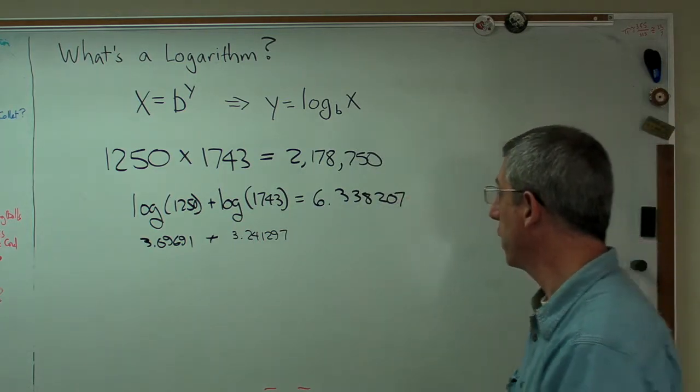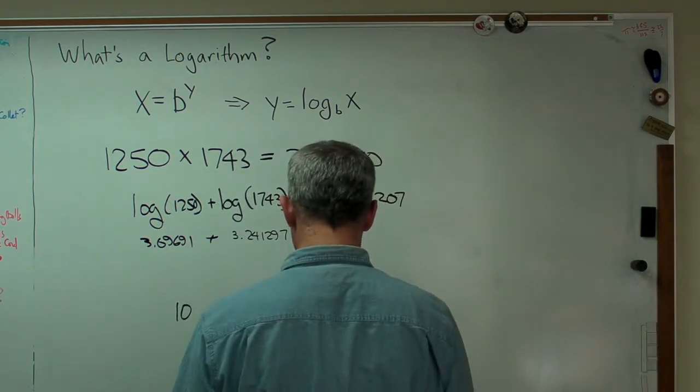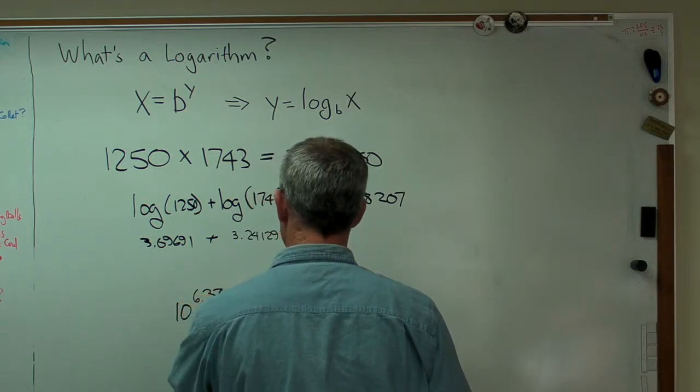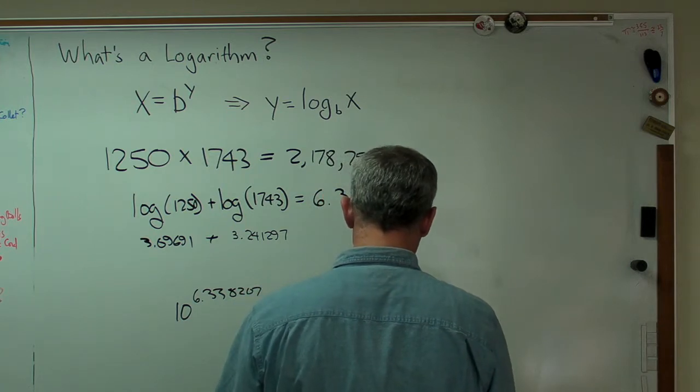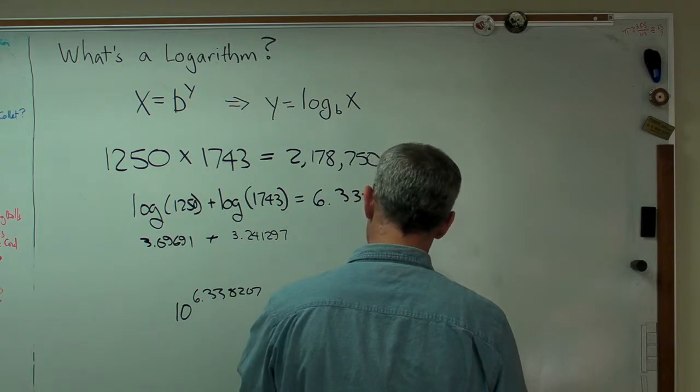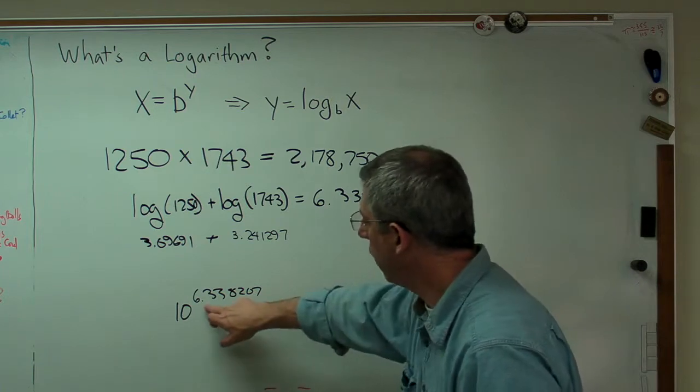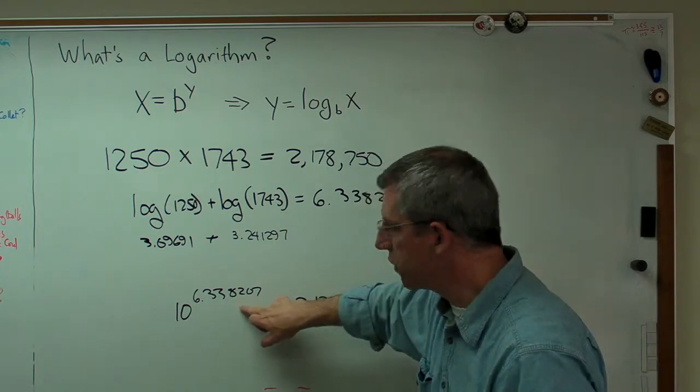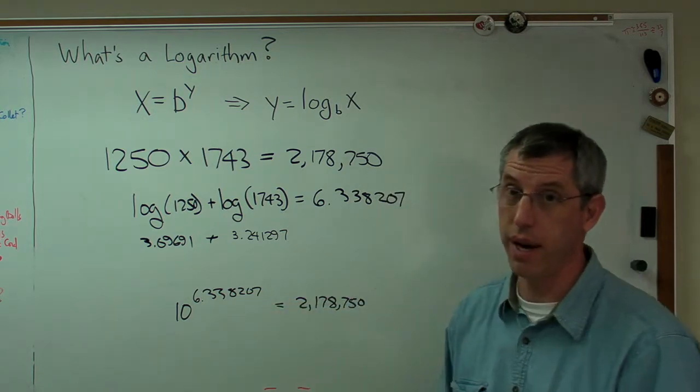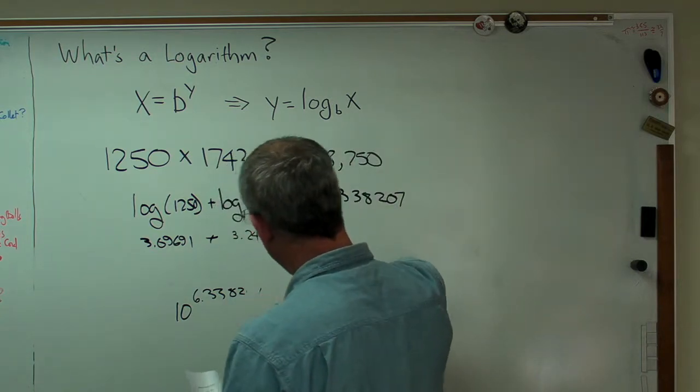Now, the way this should work is that if I take 10 to that power, I'm going to get 10 to the 6.338207 power. And that indeed works out to 2,178,750, which is my original number. Now, I carried this really, really far. There's quite a few digits there. What if I don't want to work to that many? If I'm working by hand, that's going to be a problem. Well, let's cut this off right there.